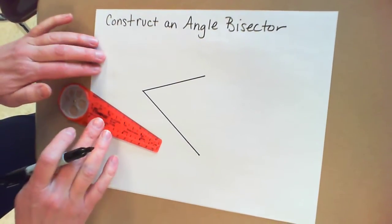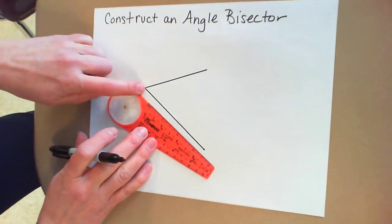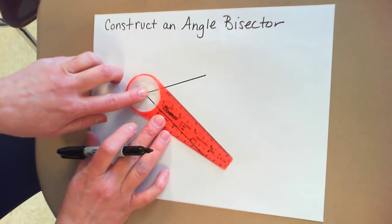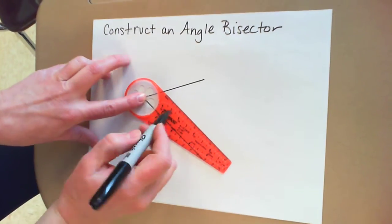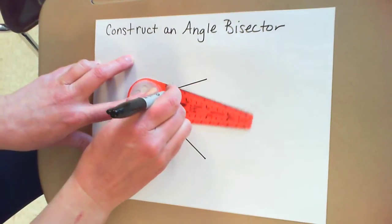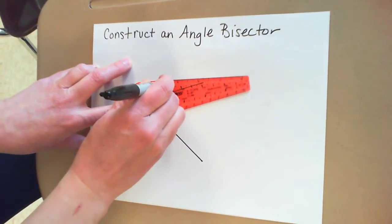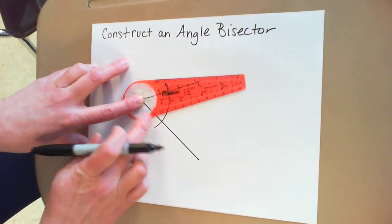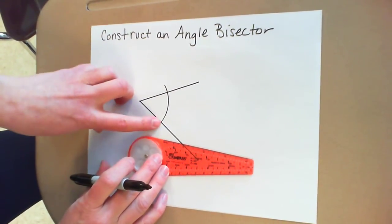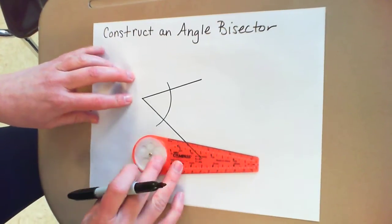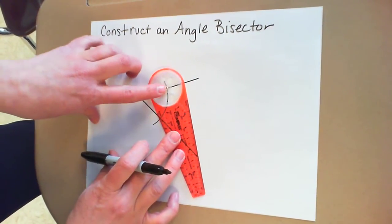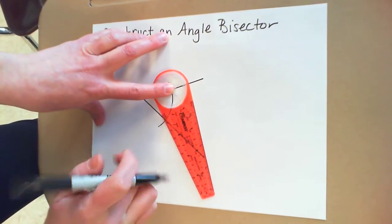And then to construct an angle bisector, you're going to use the gold dot and place it on the vertex of your angle. You're going to choose a dot to make an arch that's going to cut through both sides. This is showing you an equal distance up each side of the angle. So from this intersection point and from this intersection point, you're going to choose a dot. Align your gold ring up with the intersection. You're going to choose a dot that's more than half way across the angle.